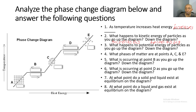Number three: what happens to potential energy as you go up the diagram? Kinetic energy and potential energy have an indirect or inverse relationship — as one goes up, the other goes down. So as we go up the diagram, potential energy decreases because particles are moving faster and faster. As we go down the diagram, particles slow down and condense, so potential energy increases as we go down.